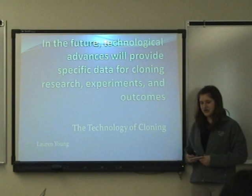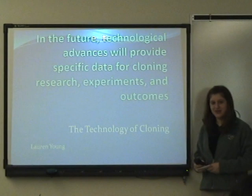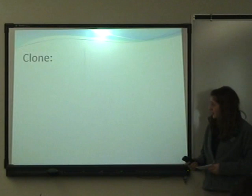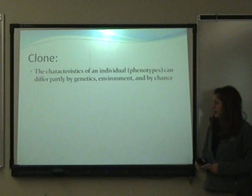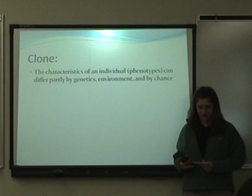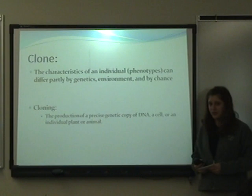In the future, technological advances will provide specific data for cloning research experiments and outcomes. A clone's characteristics — its phenotype — can differ partly by genetics, environment, and just by chance. Cloning is the production of a precise genetic copy of DNA, a cell, or an individual plant or animal.